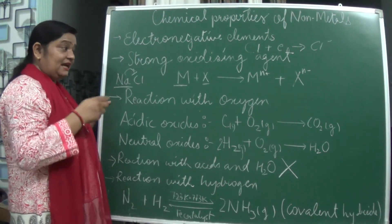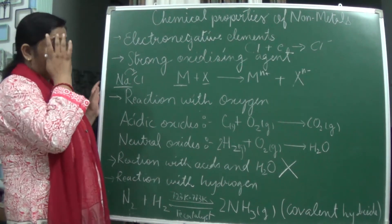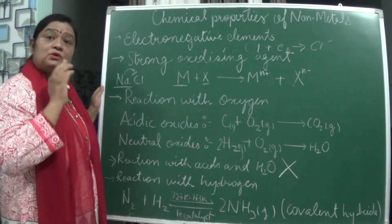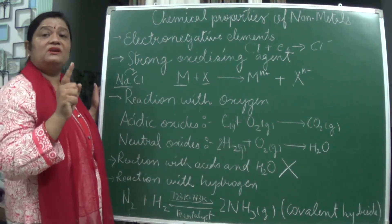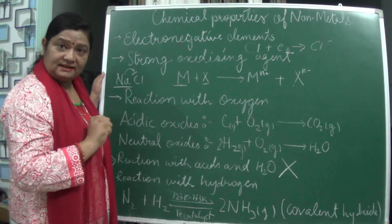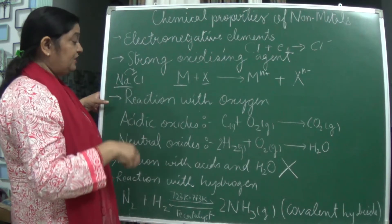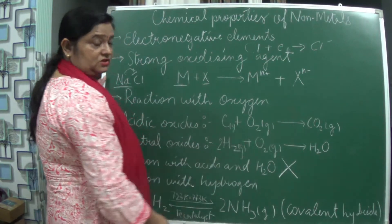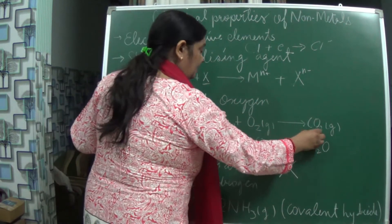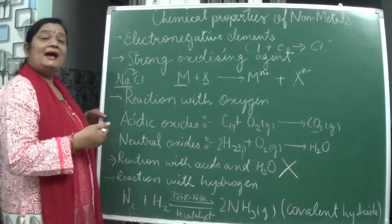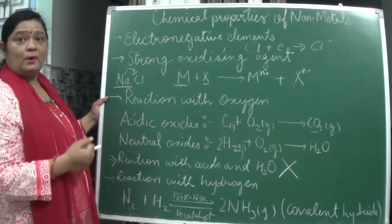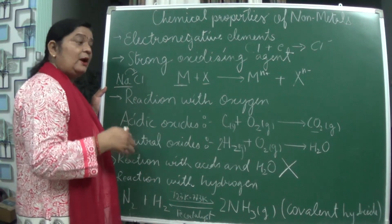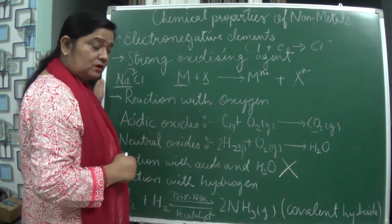When we see the reaction of non-metals with oxygen, they form the corresponding oxides. Those oxides can be acidic or neutral in nature, but never basic in nature. For example, carbon plus oxygen forms carbon dioxide, which is an acidic oxide. Sulfur also combines with oxygen to form sulfur dioxide, which is also an acidic oxide.